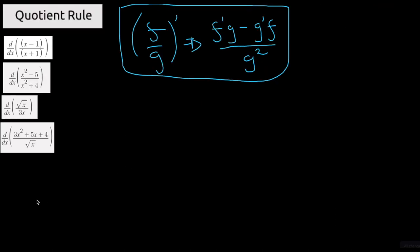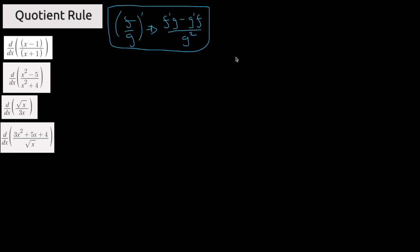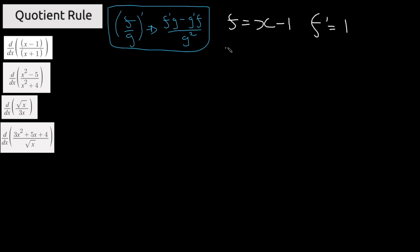Pause the video and try and solve these next four examples. For the next one, f is equal to x minus 1, f prime is equal to 1, g is equal to x plus 1, and g prime is equal to 1 as well.